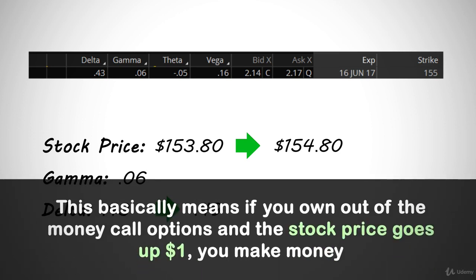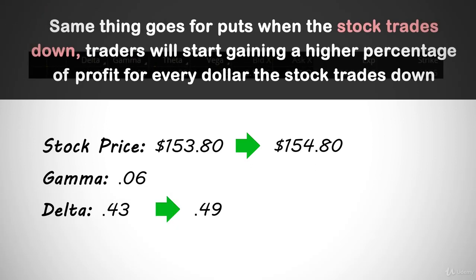This basically means if you own out-of-the-money call options and the stock price goes up $1, you make money. But the next dollar-up swing makes you even more money — the dollar after that, even more. For every dollar the stock trades up, you're gaining deltas, and with that, more profits on a percentage basis as the stock trades higher. The same thing goes for puts when the stock trades down. Traders will start gaining a higher percentage of profit for every dollar the stock trades down because the delta is getting larger. Gamma is probably the most confusing concept, but it's also one of the least important elements to trading, and something you will soon understand if you keep with it.